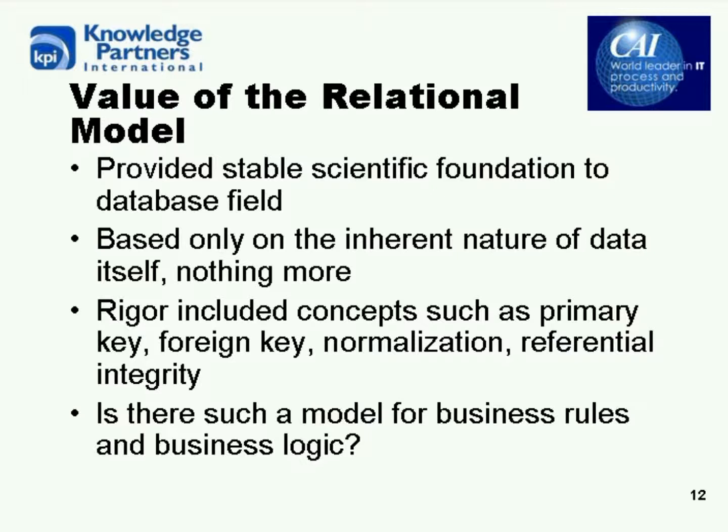Here you see the process model from the earlier page and its connection to a decision model. Each of those blue dot icons in the tasks represent decision tasks. We've removed the business rules from the process model, crafted them into a decision model — the central shape you see on the slide — and the decision model is connected to a set of rule families maintained in spreadsheets on the right-hand side.